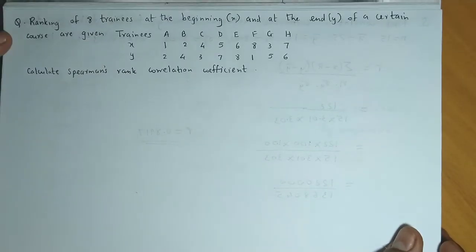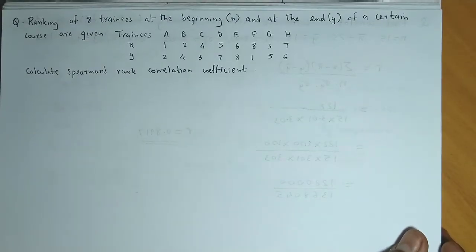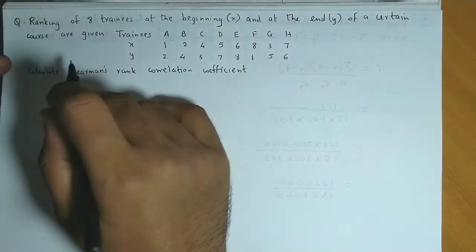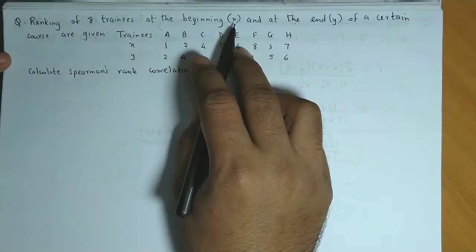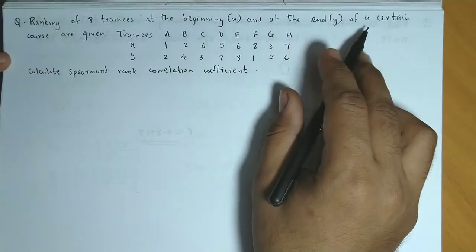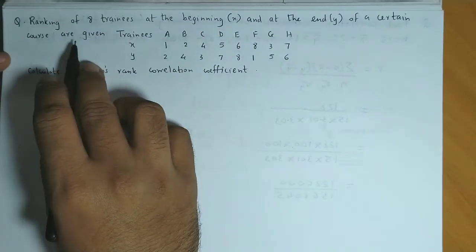We now discuss an example based on Spearman's rank correlation coefficient. The ranking of eight trainees at the beginning, denoted by X, and at the end, denoted by Y, of a certain course are given.